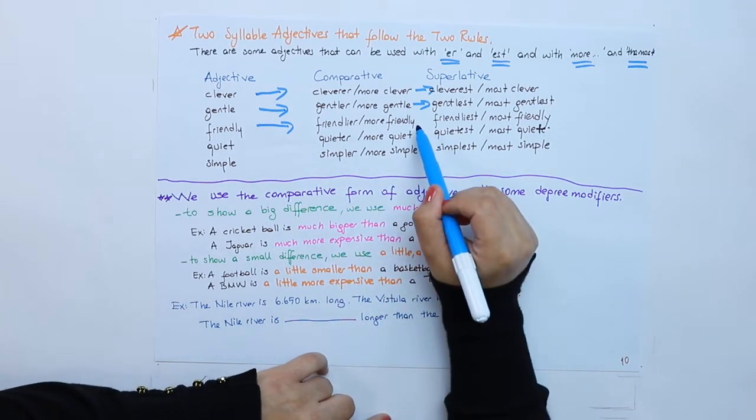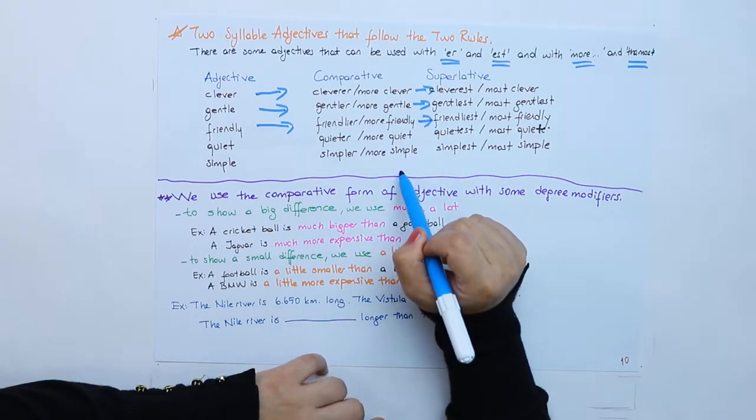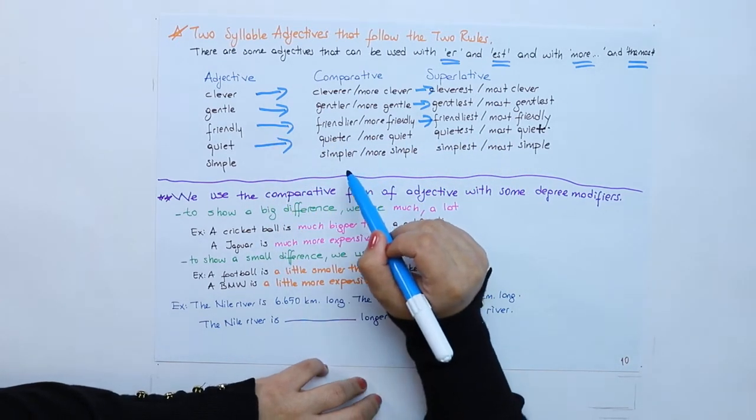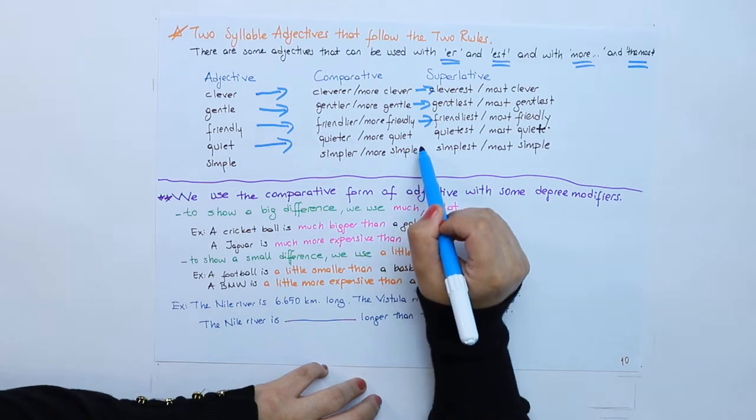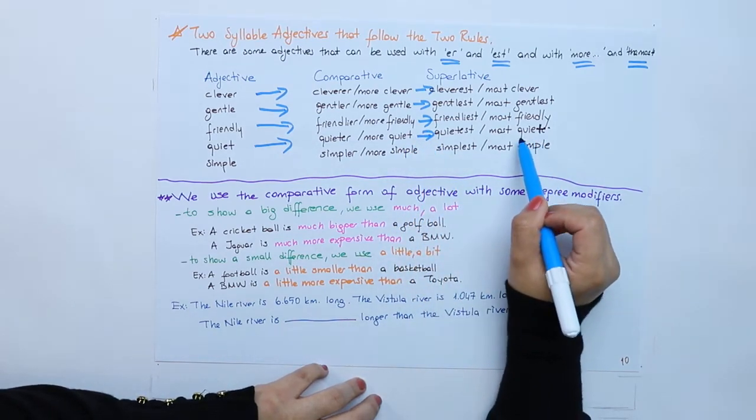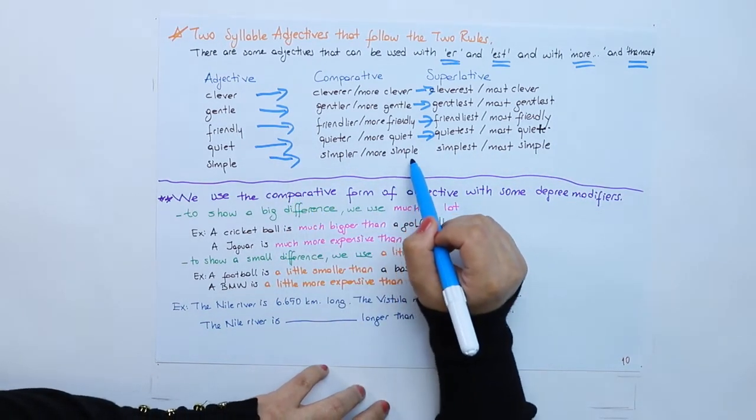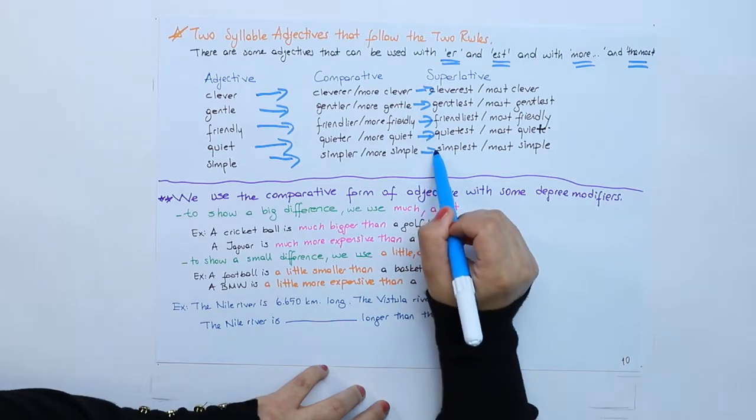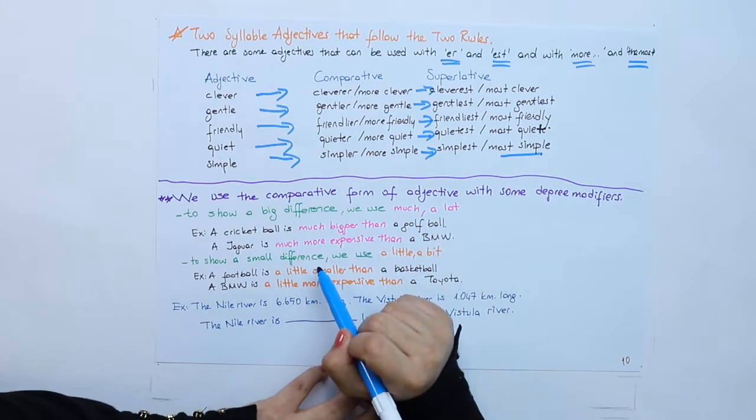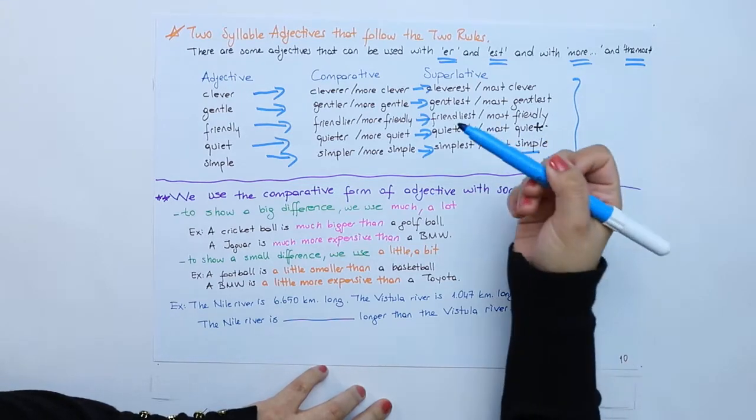Friendlier or more friendly, friendliest or the most friendly. Quieter or more quiet, the quietest or the most quiet. Simpler or more simple, the simplest or the most simple. Please learn them by heart as well because they're just five adjectives.